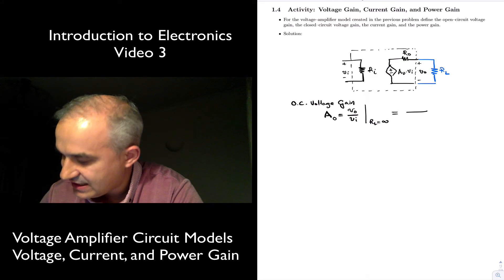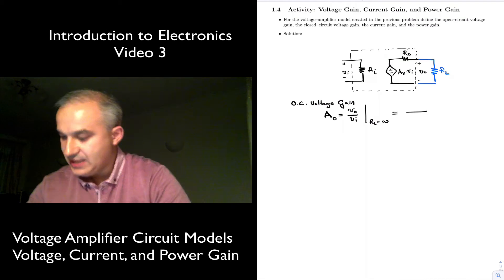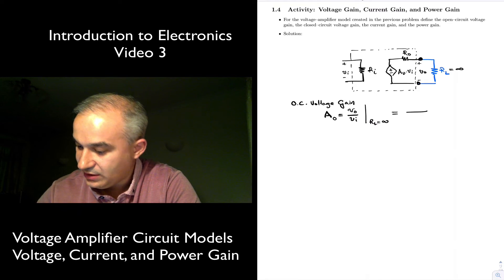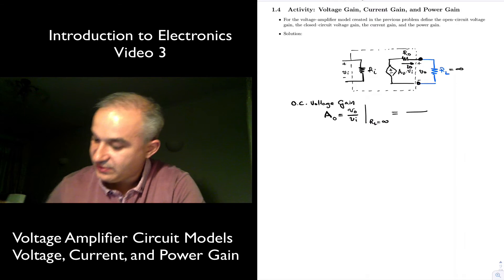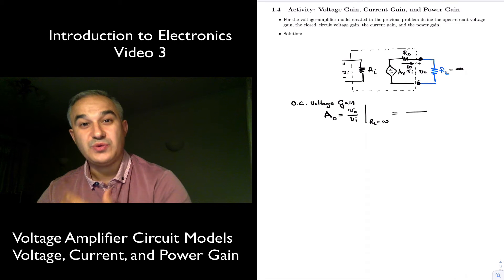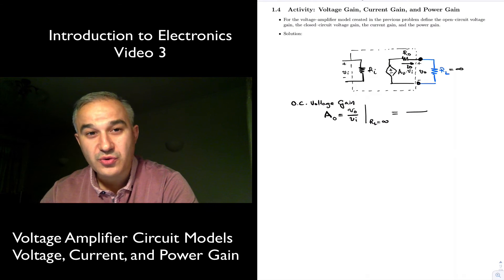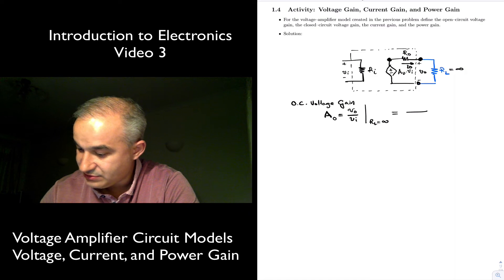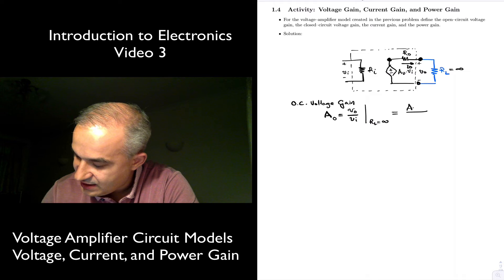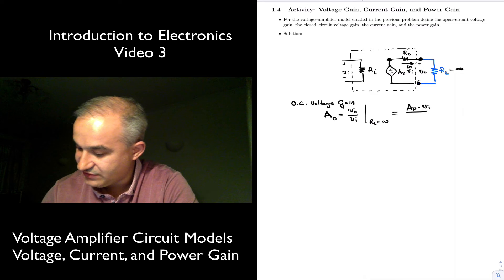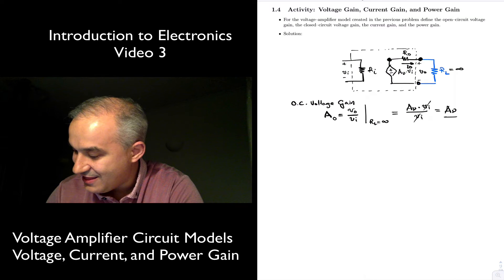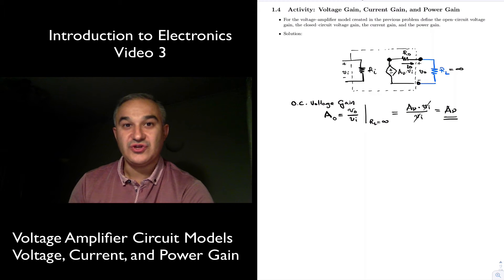So if that happens, let's calculate using circuit analysis where the output voltage is at this node for RL equals infinity or RL disconnected. The output current is going to be zero because we have an open circuit. Therefore, we are not going to have any voltage drop from the internal node to the output node. The voltage at the internal node is A, the amplification factor, times the voltage input. This cancels with the input voltage, so we get AV. This is one of the reasons why this gain is called the open circuit gain.